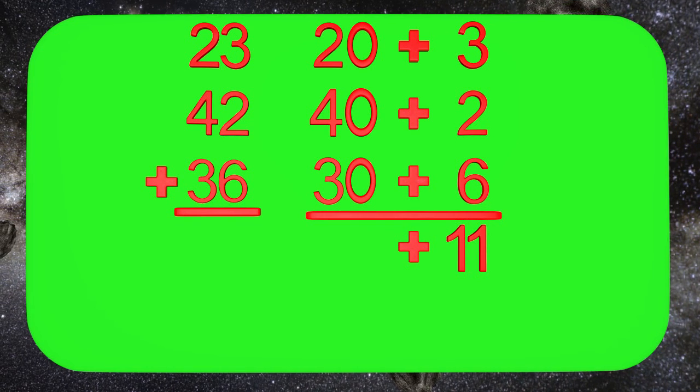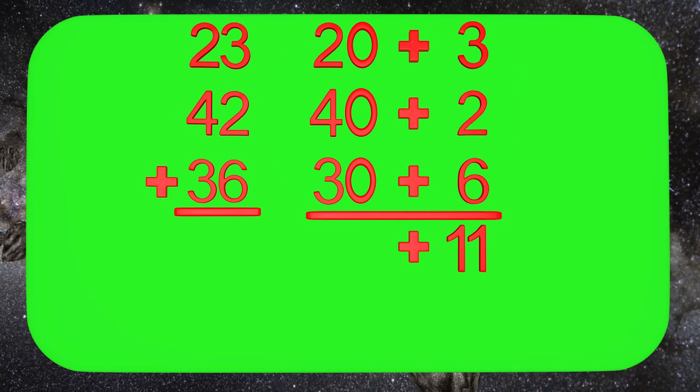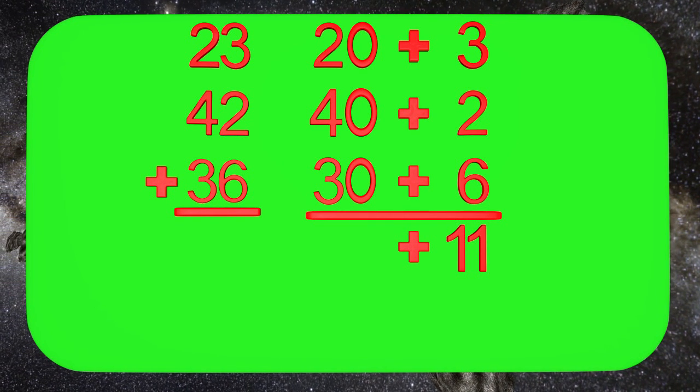Now we have 20 plus 40 plus 30. Well, 2 plus 4 equals 6, and 6 plus 3 equals 9. So we get 90.